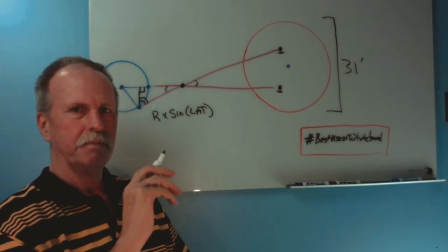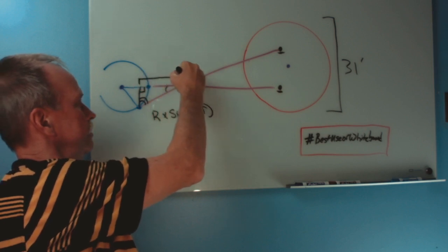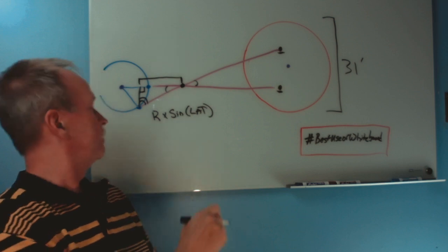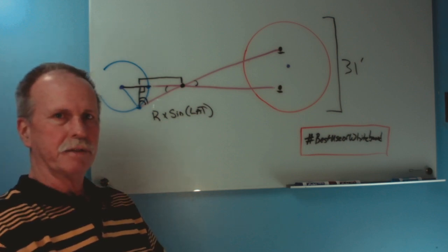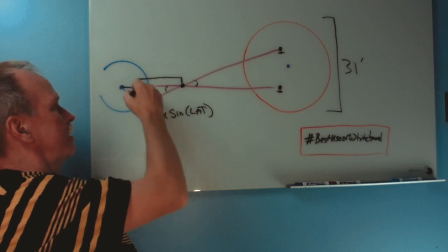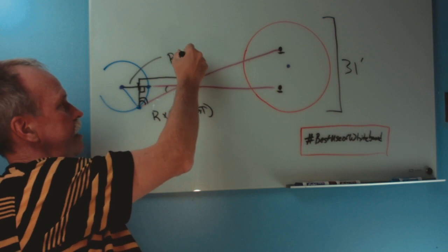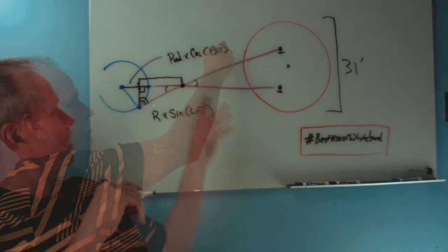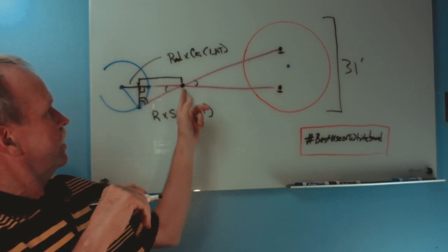So what does that tell us? Well, it tells us this distance right here, from the base of the triangle to Venus. Well, how does that help us? We know that this radius is the radius of the Earth. And we know that this portion of the radius is the radius times the cosine of the latitude. And once we solve for that little segment right there, we can determine the length of that whole leg.